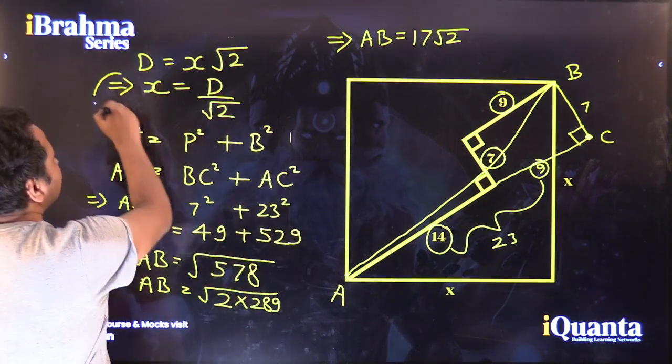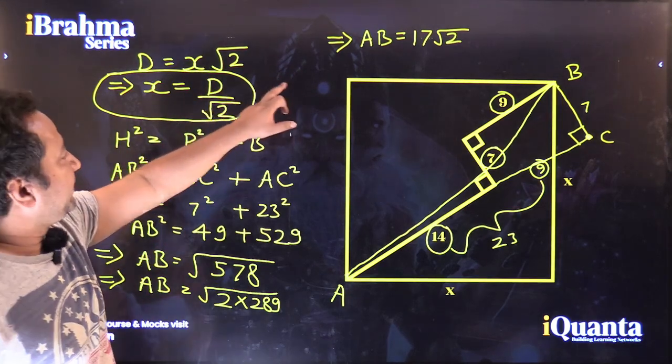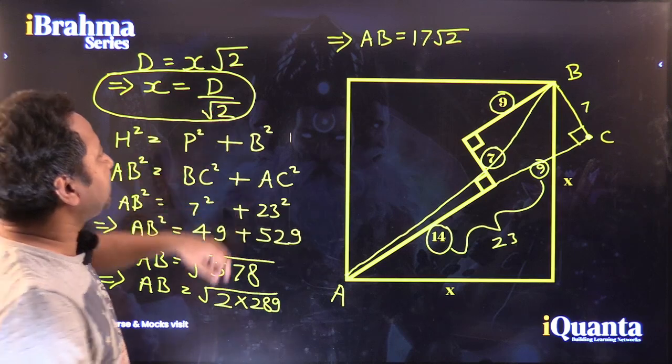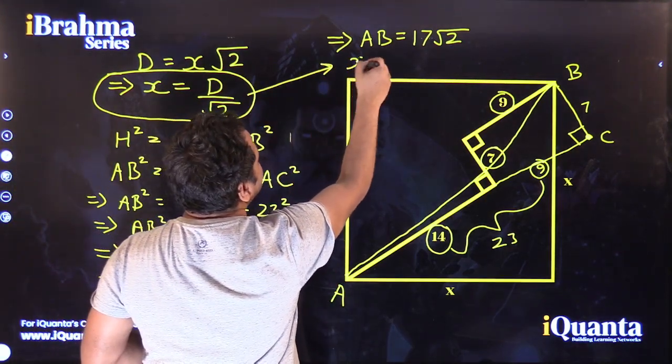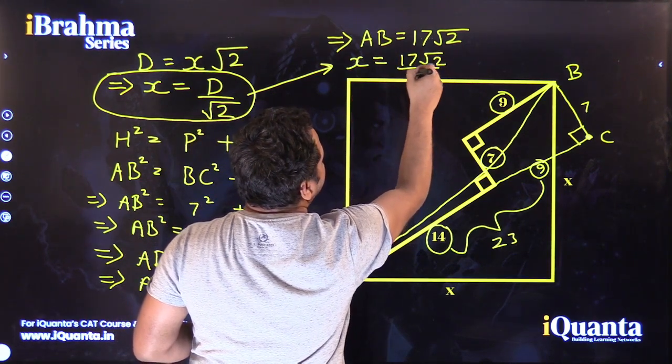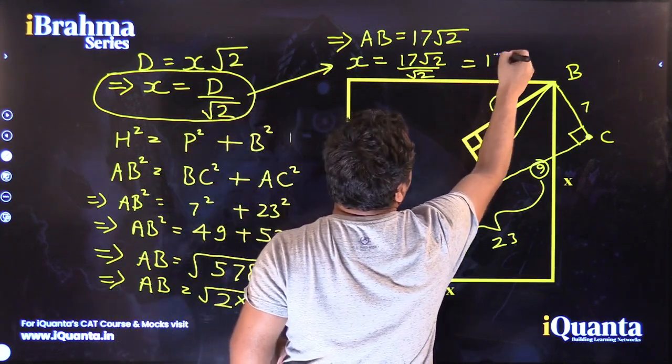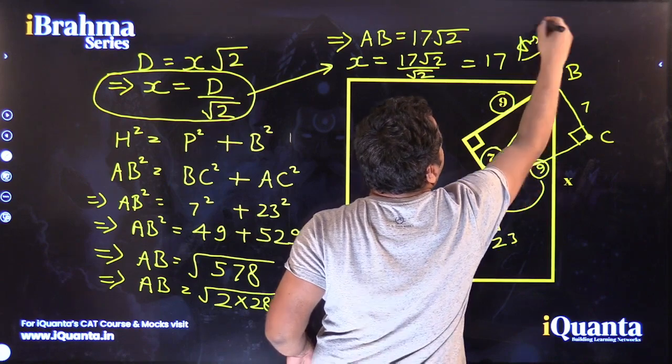As we have this result here, we need to find the value of x. And the value of AB, we can replace here as the value of D. So, x will be equal to 17 root 2 divided by root 2 or 17 units. This is our answer.